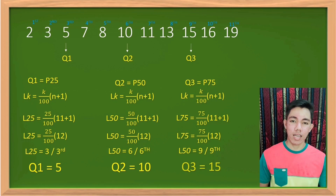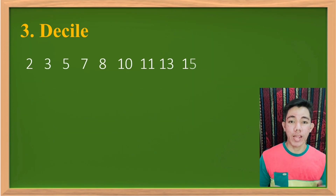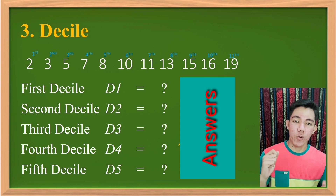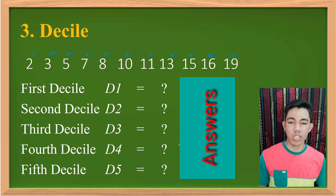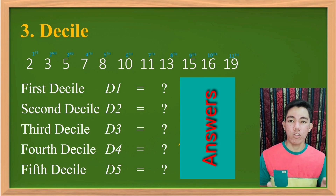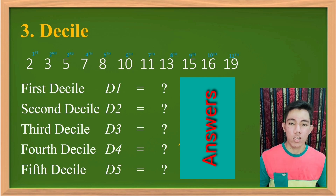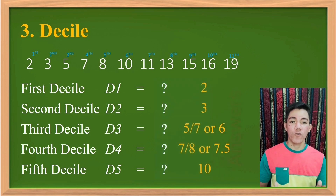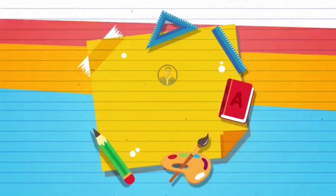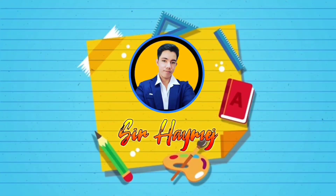That's how you find the decile as well — first find the equivalent percentile for the decile, then apply the same formula. Memorize the formula and the process and you'll know how to get the answer. Leave a comment below with your answer to the question. I hope you understood the topic — feel free to ask questions or clarifications in the comment section. Goodbye!